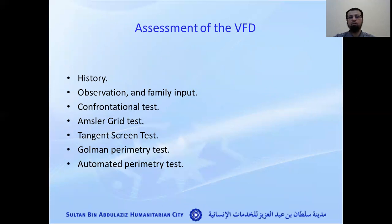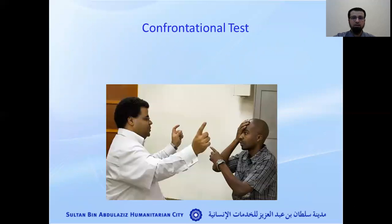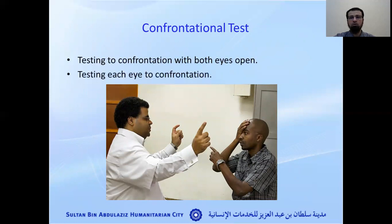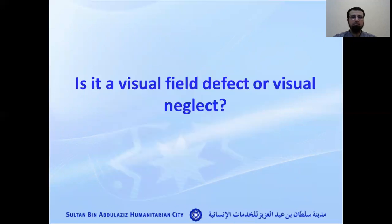Other assessments can be done by the optometrist, and we can get feedback from them about their objective assessment results. Using the confrontation test, we identify which side of the brain is affected, and then we can start implementing the intervention.